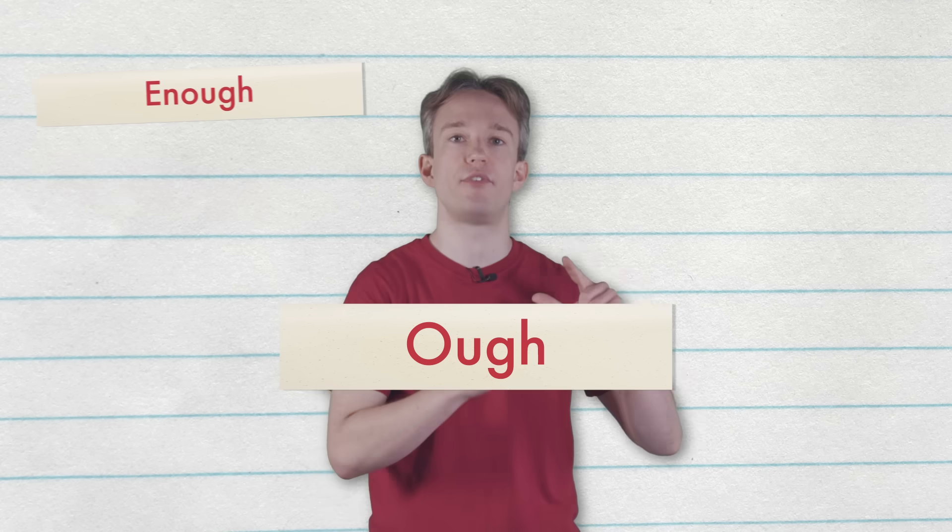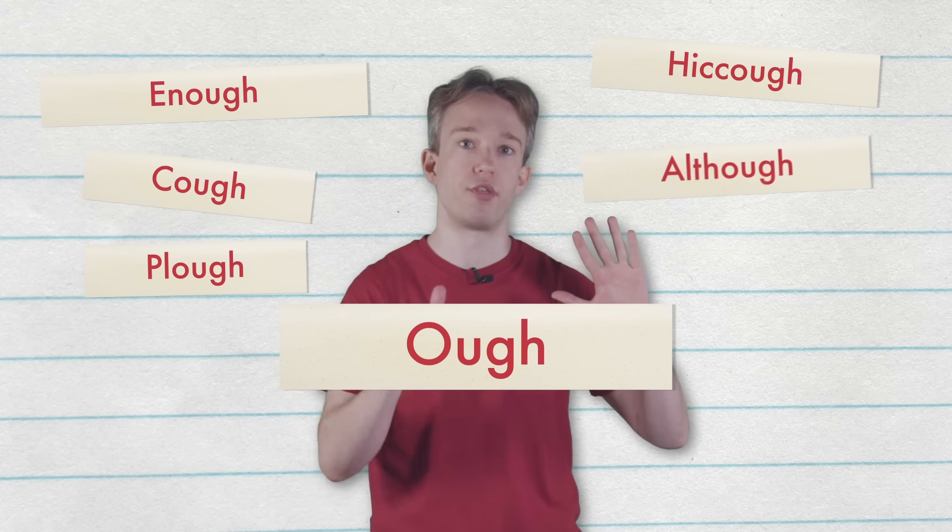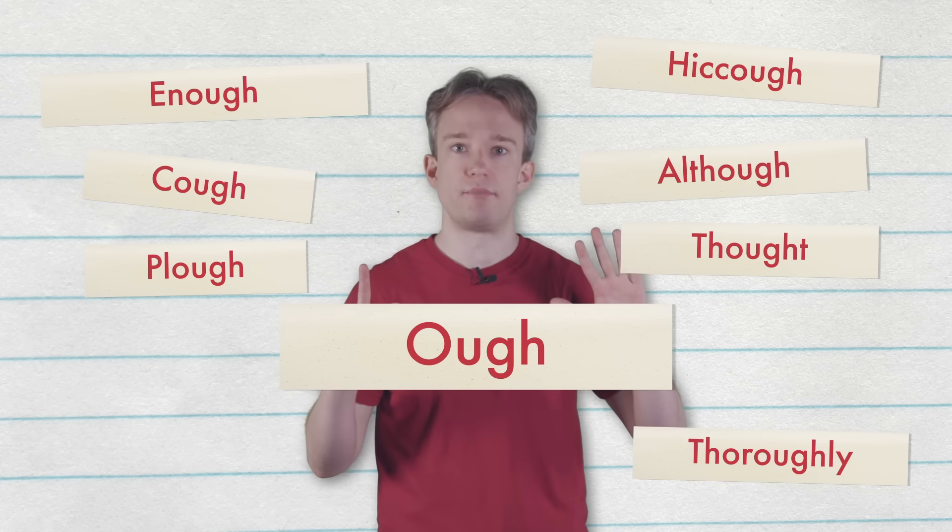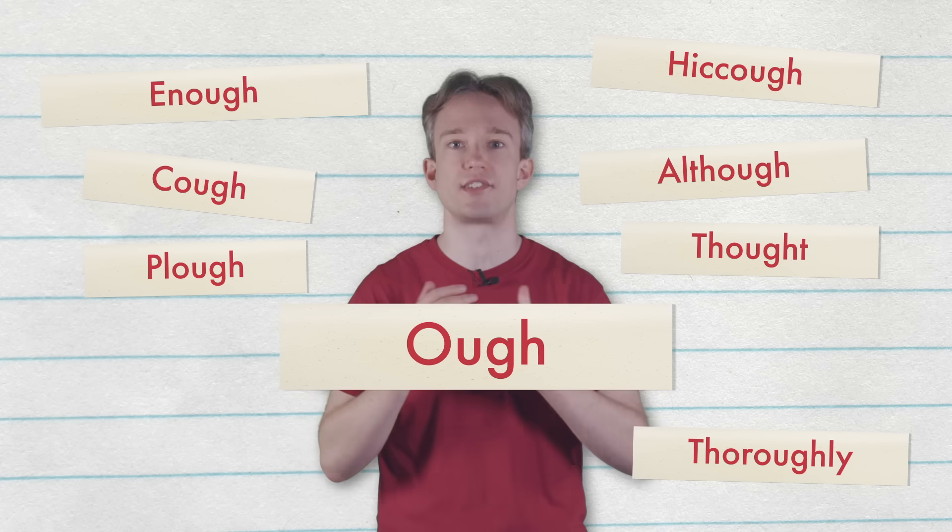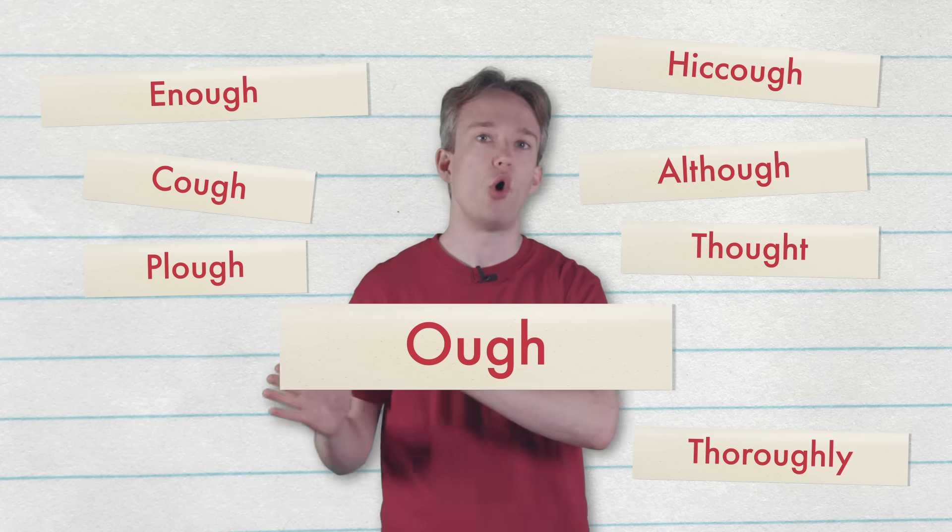English spelling is a mess. O-U-G-H becomes different sounds in enough, cough, plough, hiccough, although, thought and thoroughly. Part of the reason for that is that English has so many loanwords whose pronunciations got either maintained or approximated. Some were written down in the way that monks would spell that sound whenever that word happened to enter the language.